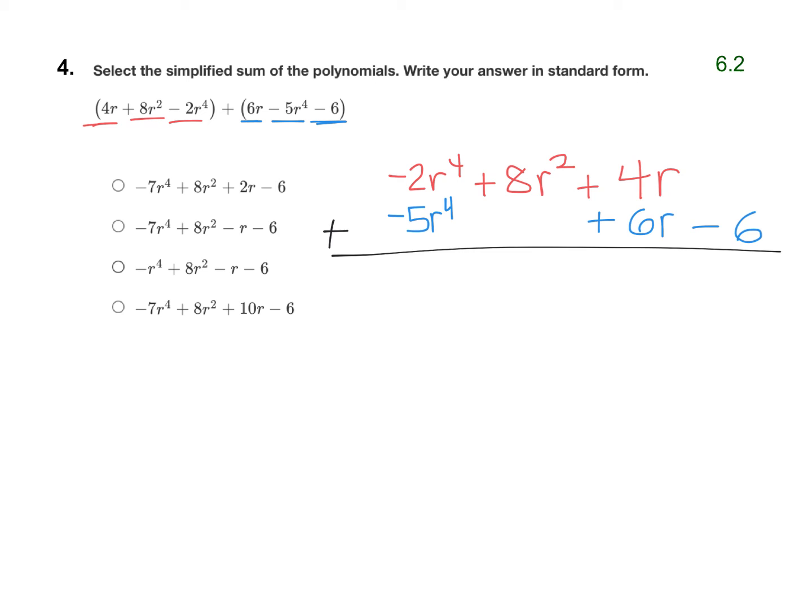Now we just add them vertically. Negative 2 plus negative 5 is negative 7, so my first term is negative 7r to the fourth. 8r squared doesn't have anything to add to it, so it's going to stay as 8r squared.